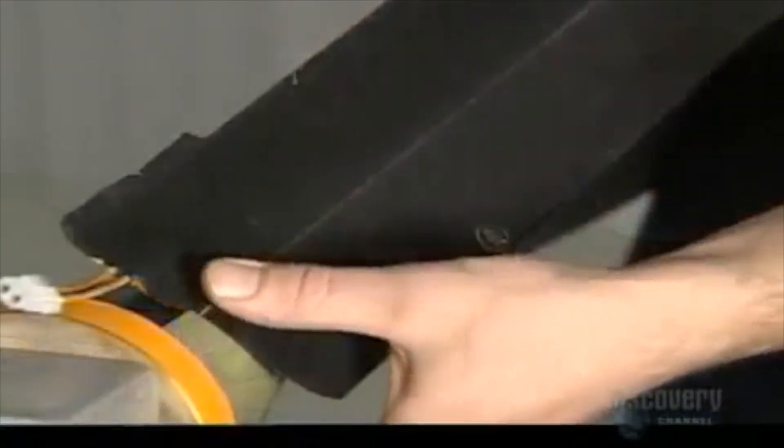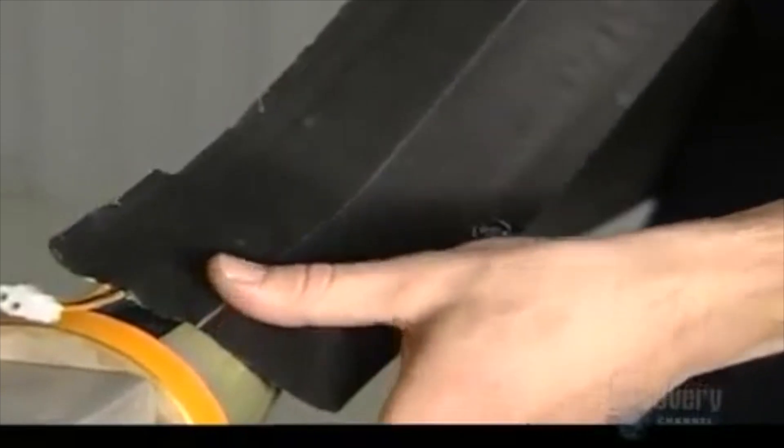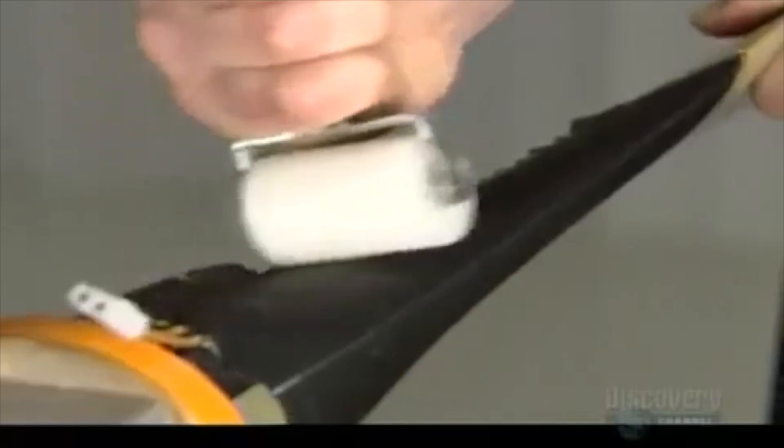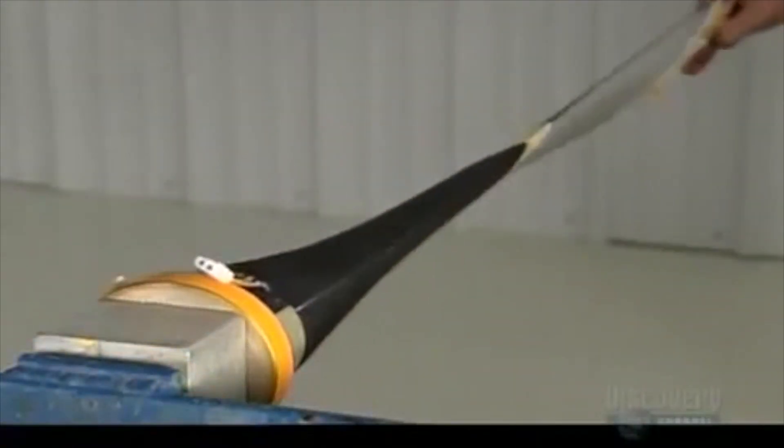Next comes a de-icing boot—a rubber-encased electric heating element that prevents ice buildup. The rubber is highly durable yet flexible enough to mold to the curve of the blade.